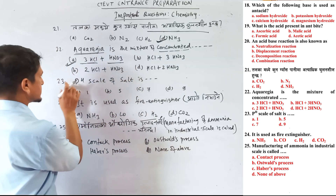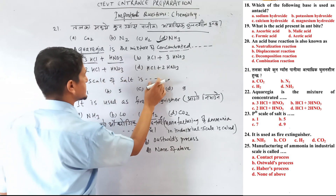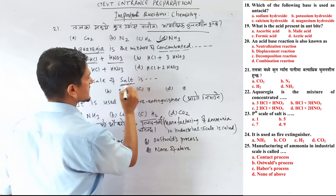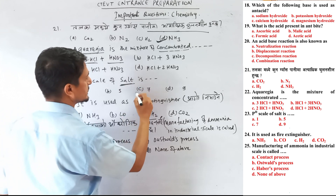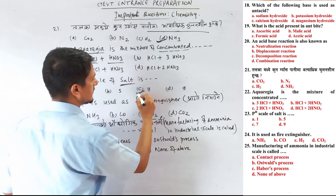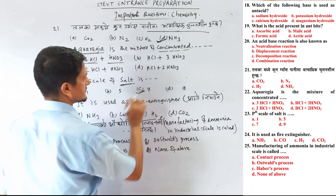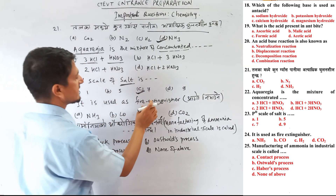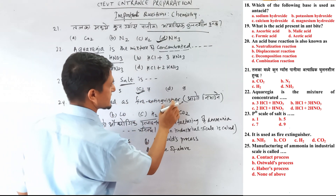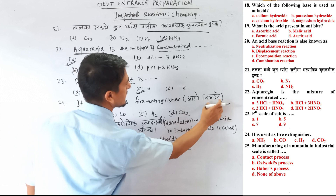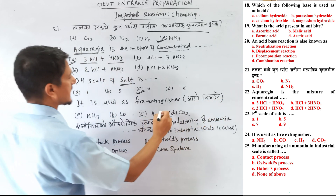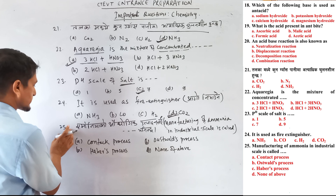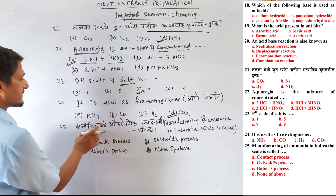Question number 23: The pH scale value for neutral compounds like salt, water, and sugar is 7. Question number 24: Carbon dioxide is used as a fire extinguisher.